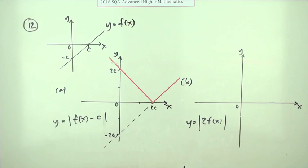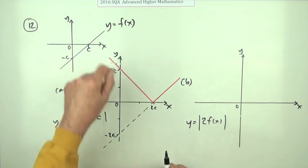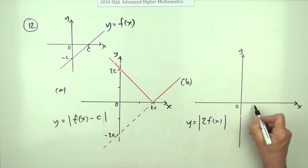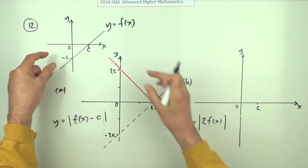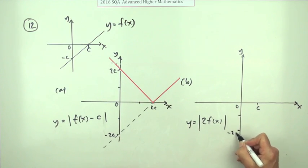Now what about the second one? The absolute value of double f(x). Well, forget the absolute value for now. If you double all the coordinates, that means anything on the x-axis will stay where it is, so it's going to stay at c. But of course, doubling it means it will again drop down to negative 2c. Use dotted lines to show that first part.